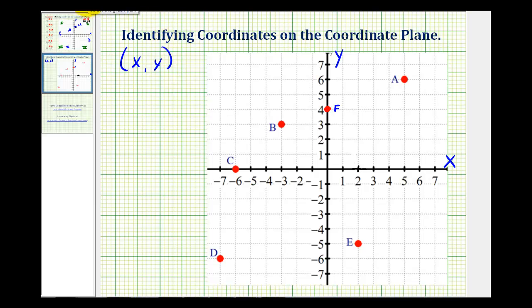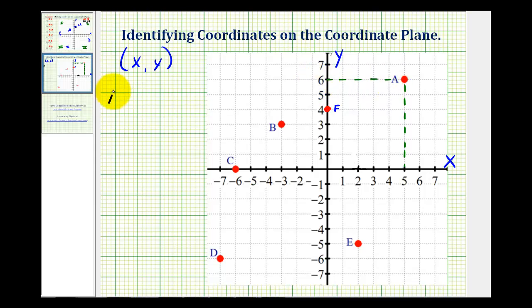If we look at point A, to determine the x-coordinate, we just need to draw a segment straight to the x-axis. Here the x-coordinate will be positive five. And then we draw a segment straight to the y-axis to identify the y-coordinate. So the y-coordinate is positive six. The x-coordinate always comes first and the y-coordinate always comes second.